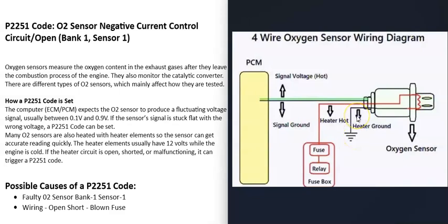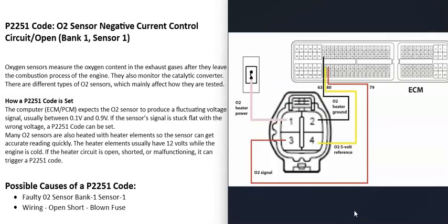These O2 sensors have two parts: the oxygen sensor part that detects how much oxygen there is, and heater elements built in. The O2 sensor can't get good readings until it gets hot, so the heater elements help it warm up quickly without waiting for the engine and exhaust to warm up. The heater elements usually have 12 volts going to the sensor when the engine is cold, usually on a fuse and relay. There are also two wires going to the oxygen part — a ground wire and voltage.